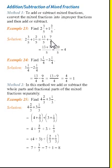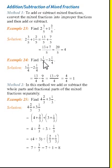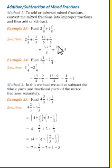Now we can add this easily. Add the numerators: 13 plus 7 divided by 5. The denominators are the same, so we write it once. 13 plus 7 is 20, so we get 20 divided by 5. Now we cancel: 5 fours are 20, so our answer is 4.